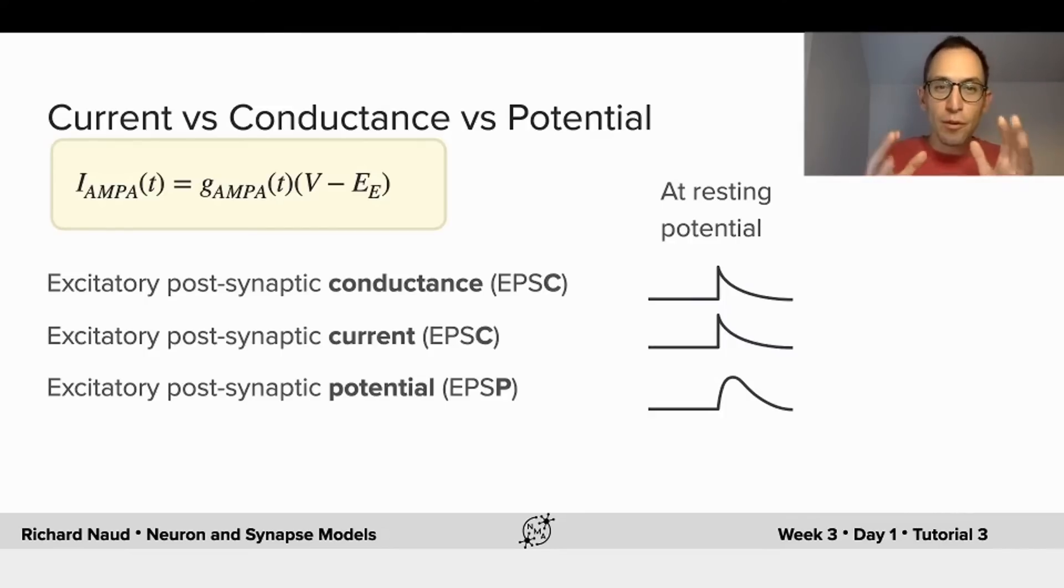Now, let me stress the difference between conductance changes and current changes and potential changes. If the cell is at the resting potential, meaning that V is far from the reversal potential EE, the excitatory postsynaptic conductance will be triggered by the presynaptic spike, increase and decay with an exponential. The current that is associated with this change of conductance will have exactly the same shape. The potential might be a smoothed version of this because of the effect of the capacitor and the resistance of the cell membrane, and converting current to membrane potential.